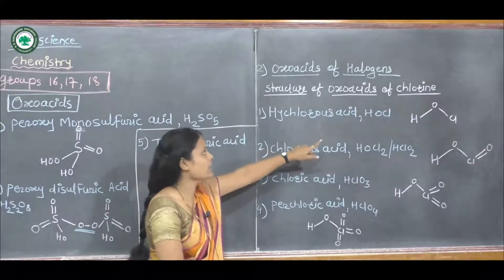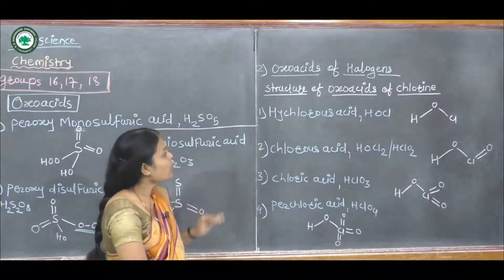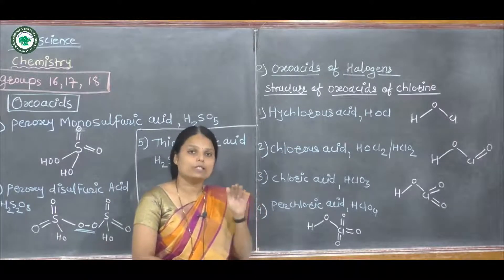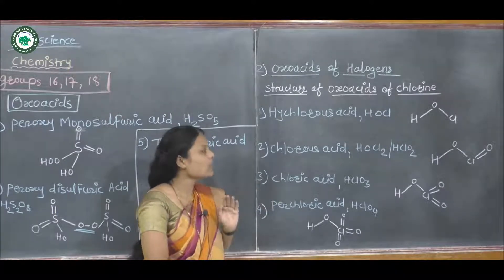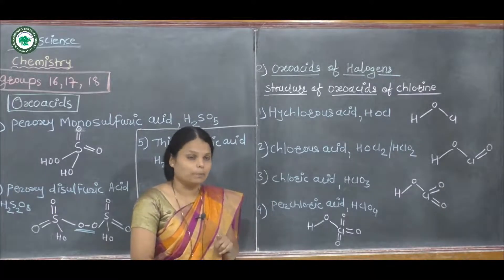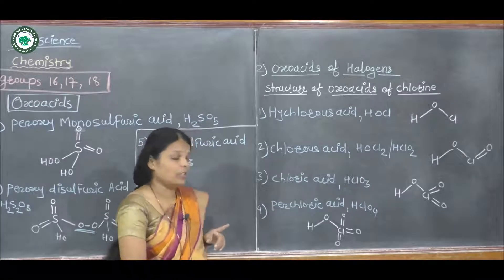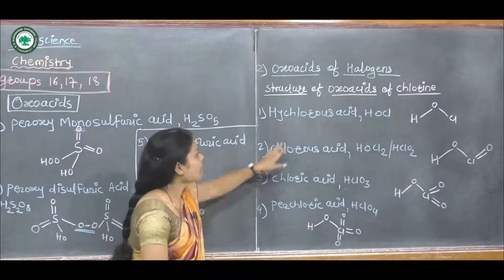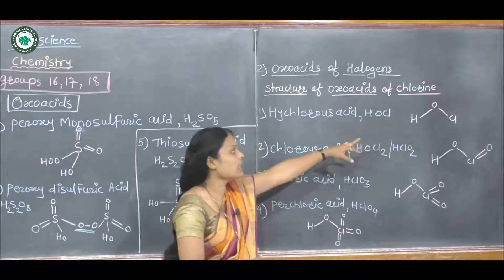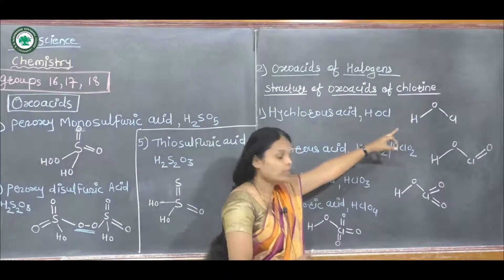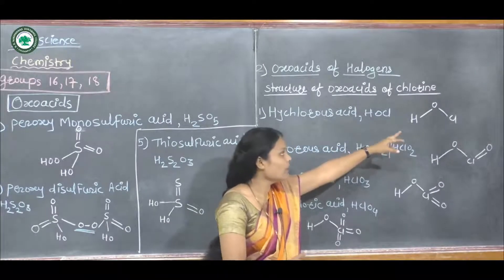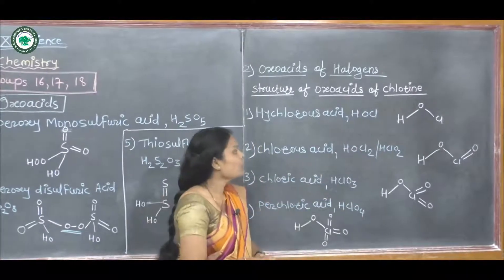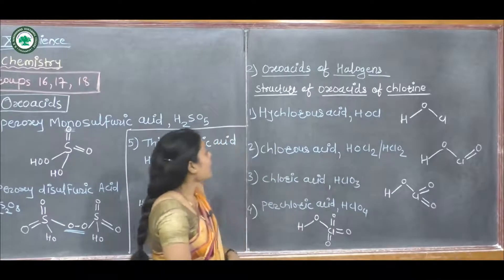In the structures of oxoacids of chlorine, the first example is hypochlorous acid. Its formula is HOCl. Hypochlorous acid has one chlorine atom and one oxygen atom. Its structure is an HO single bond with chlorine attached to the oxygen atom.